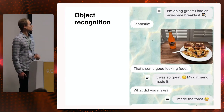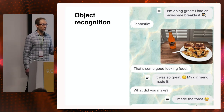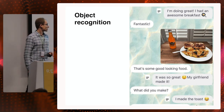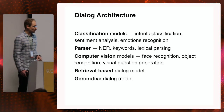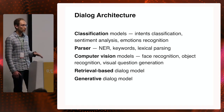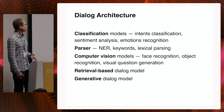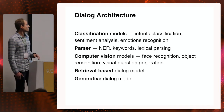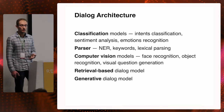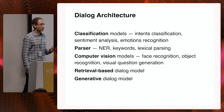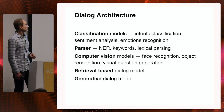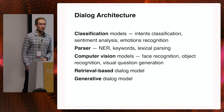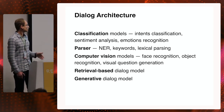Here's an example of object recognition: a user talking about breakfast sent a photo, and Replica recognized it, asking what exactly the user makes for breakfast. To implement all these principles, we've built several machine learning and deep learning components. For classification, we have intent classification, sentiment analysis, and emotion recognition models. The NLP parser can recognize named entities, extract keywords, and do lexical parsing. We also have computer vision models like face recognition, object recognition, and visual question generation.